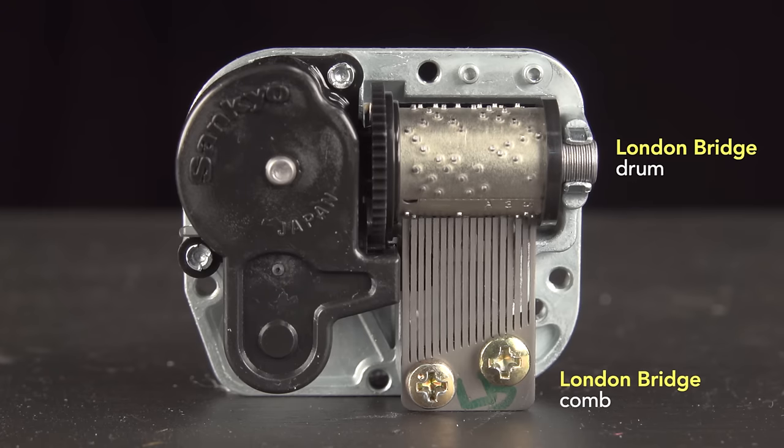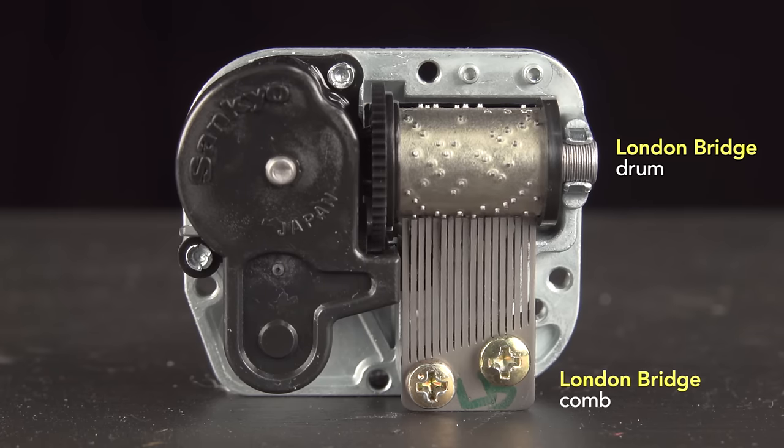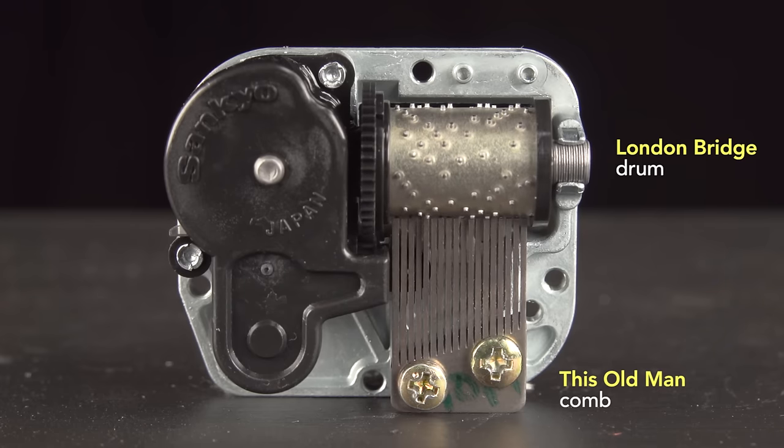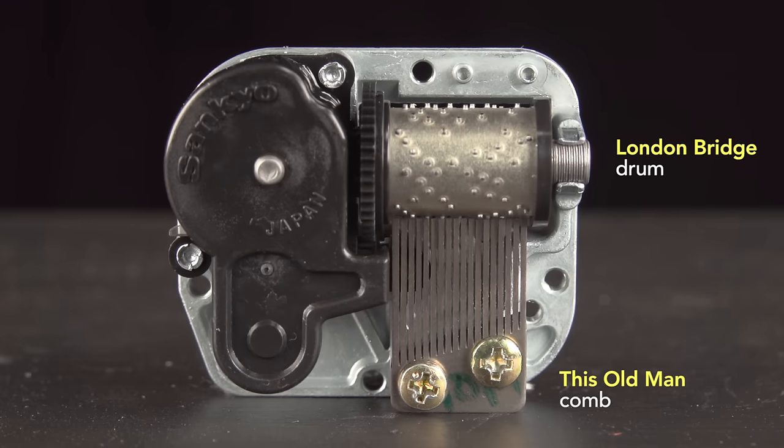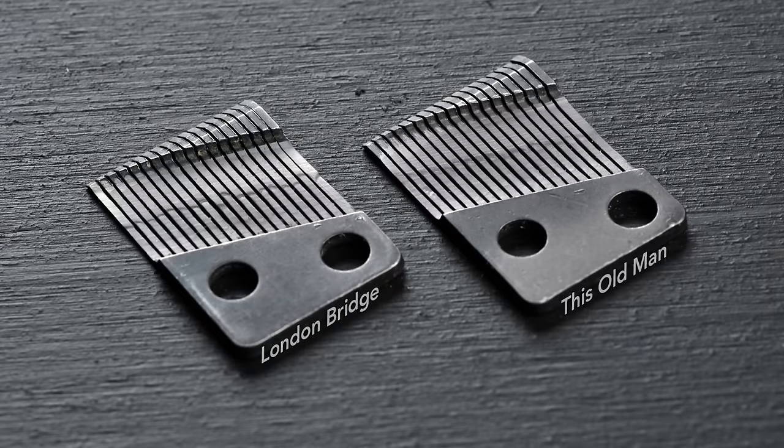For example, although each comb has 18 notes, the specific notes vary for a particular song. Here's a music box playing London Bridge, with a comb specifically designed for this melody. And now, here it is with a comb cut for a different melody, This Old Man. The timing is the same, but the notes are different, and it sounds odd. The difference in weighting is so subtle, that these two combs are indistinguishable by eye.